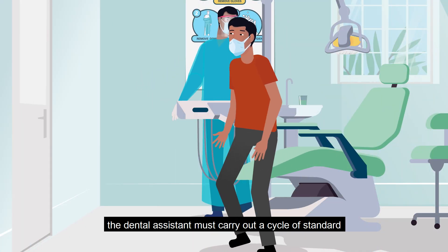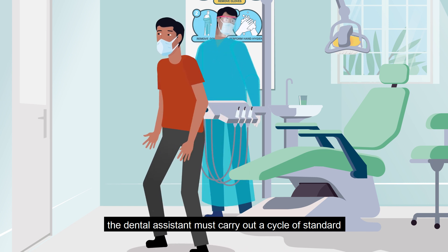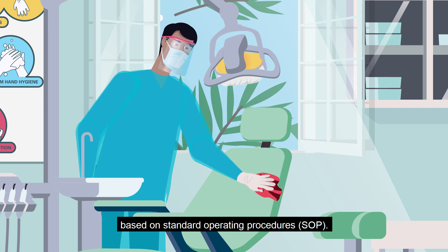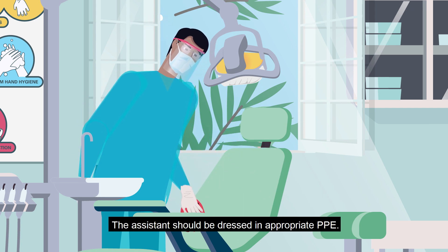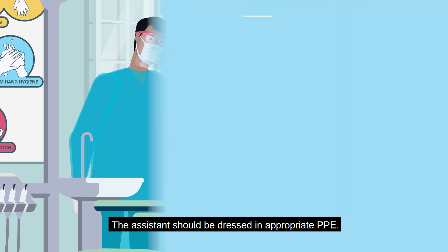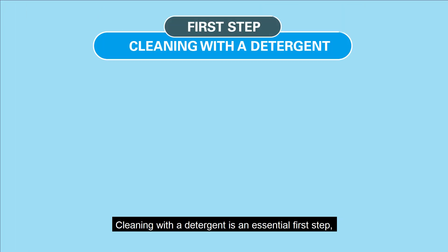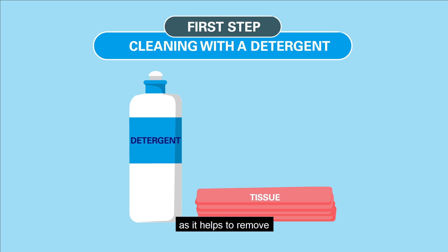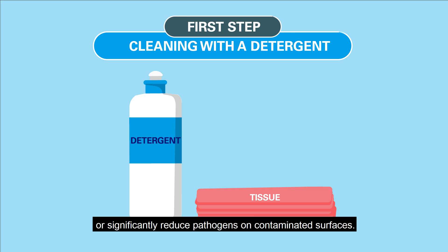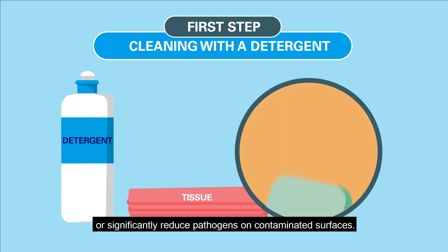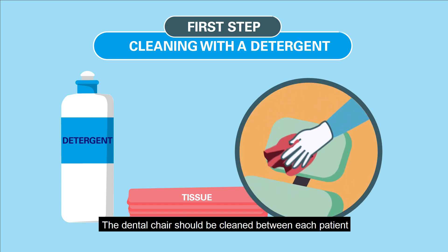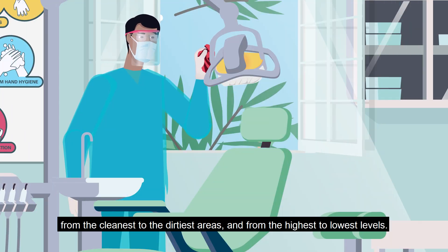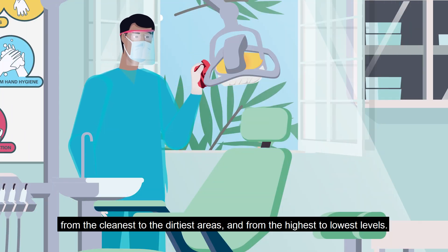After every patient, the dental assistant must carry out a cycle of standard cleaning and disinfection based on standard operating procedures (SOP). The assistant should be dressed in appropriate PPE. Cleaning with a detergent is an essential first step as it helps to remove or significantly reduce pathogens on contaminated surfaces. The dental chair should be cleaned between each patient, from the cleanest to the dirtiest areas and from the highest to lowest levels.